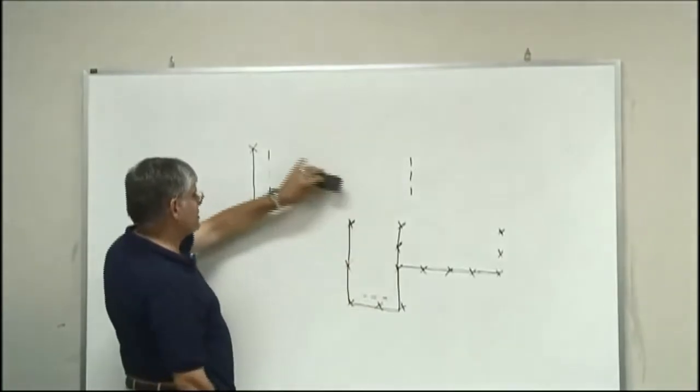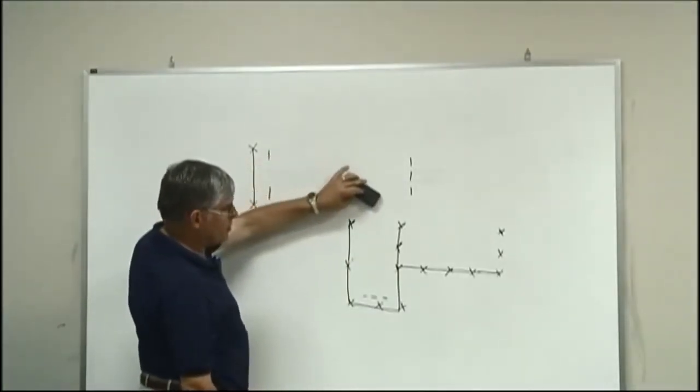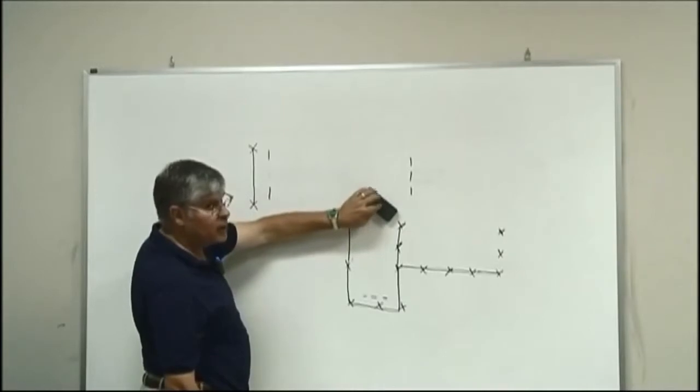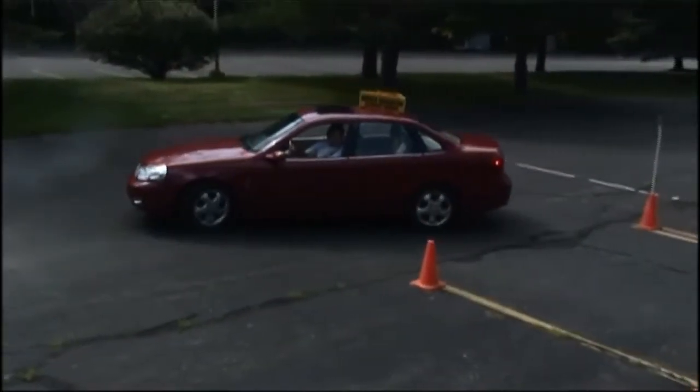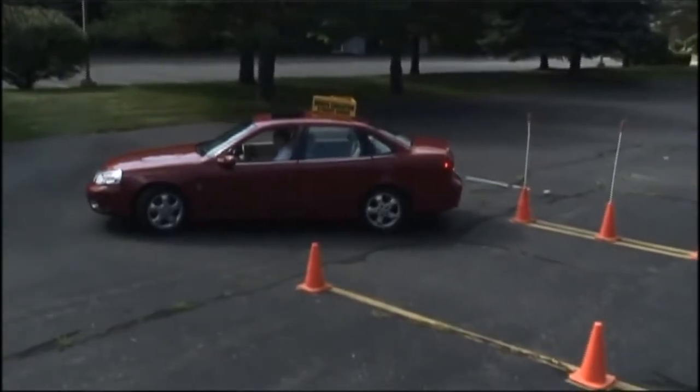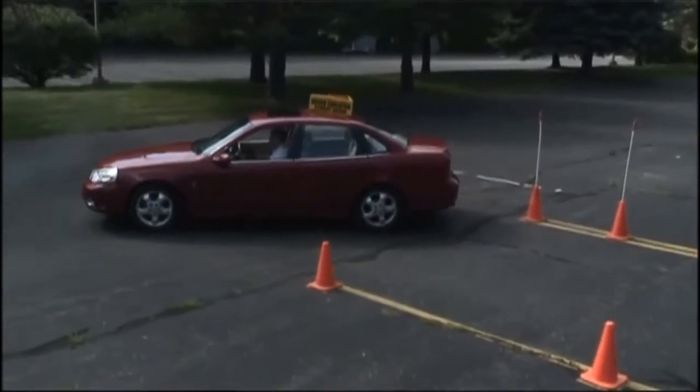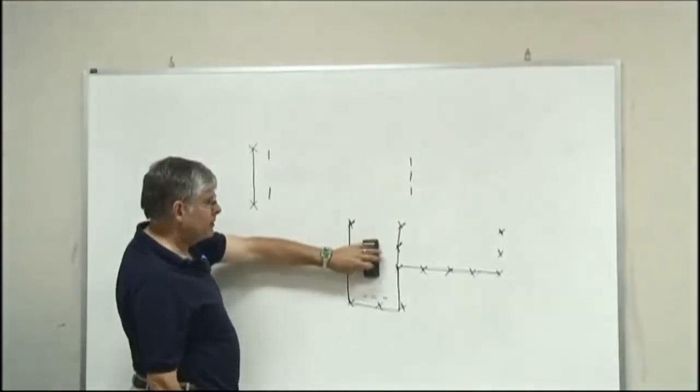On this exercise here, let's say you're backing into here, and all of a sudden you go, oh, I'm going to hit these cones. You can pull forward this way or pull forward this way, and then make a correction. It's okay. It's just a point off. You're allowed six points off again.